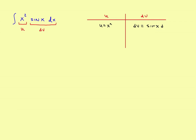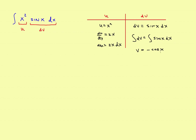Find the derivative of the u thing and the integral of the dv thing. The derivative of x squared is 2x, so du would be equal to 2x dx. Now take the integral of both sides. The integral of dv turns into v, and the integral of the sine of x will be the negative of the cosine of x. Then you go back to your integration by parts formula: u times v minus the integral of v du.